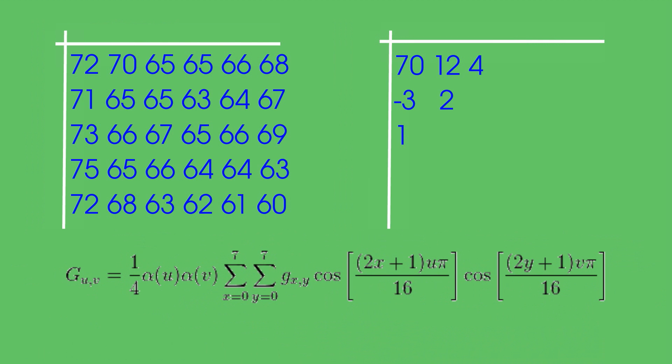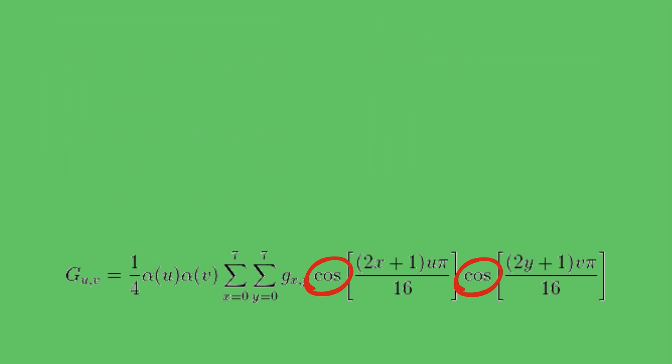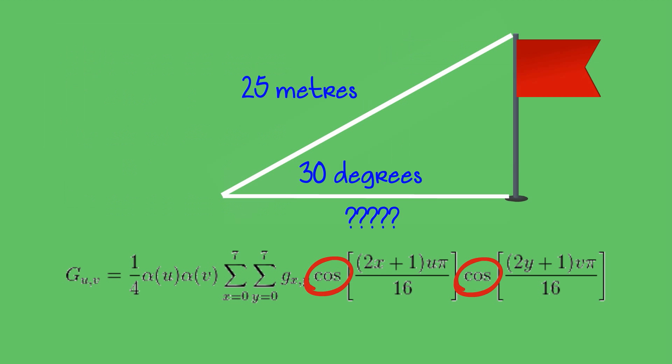Here's the formula. All I'm interested in is these three letters: C-O-S. When you see this, you might be thinking of cosine from trigonometry at school. Surely this is not what's used in JPEG. After all, what do we use cosine for in high school? Typically something like: we've got a flagpole, the distance to the top is 25 metres, the angle is 30 degrees — how far is it to the base? Even saying all of this is probably sending a shudder through some people. Surely this is not what is used for JPEG, which is nothing to do with angles and distances.